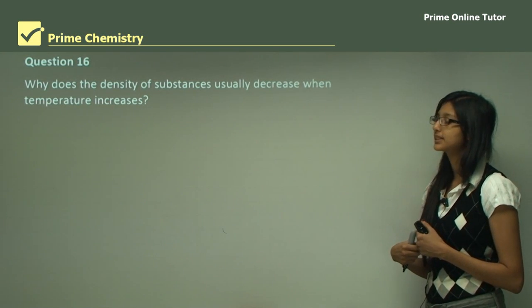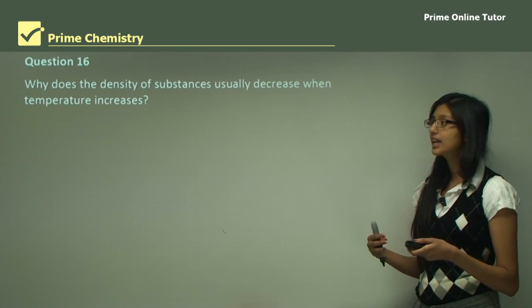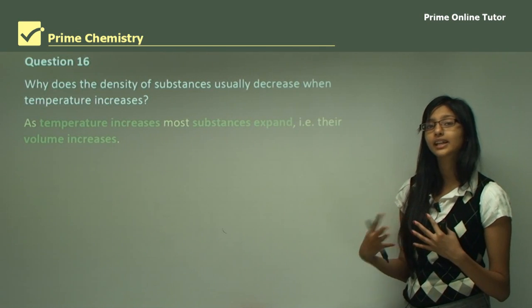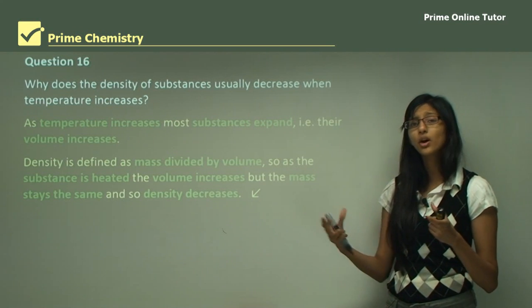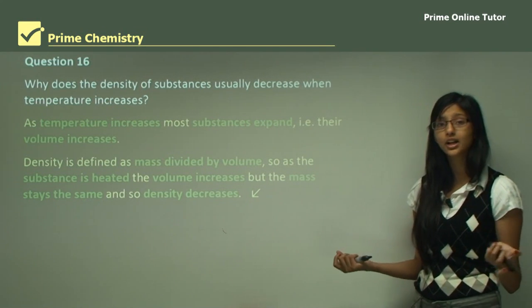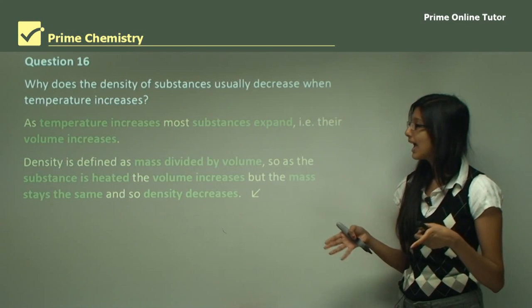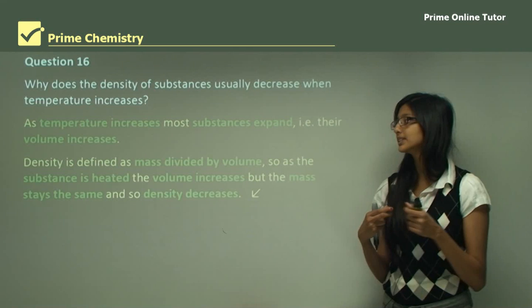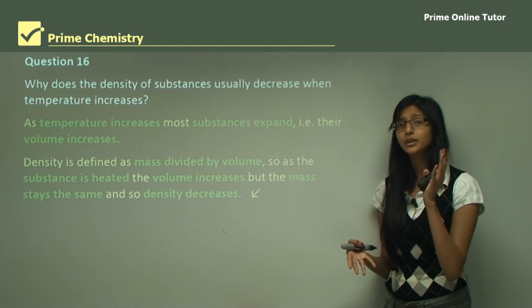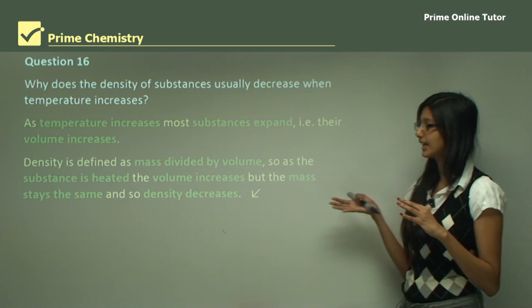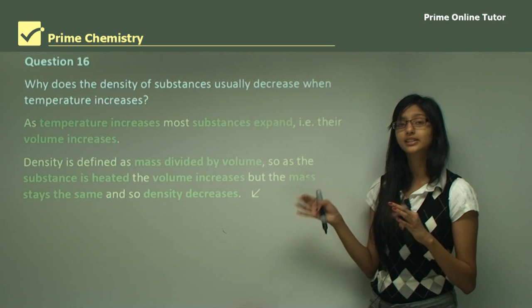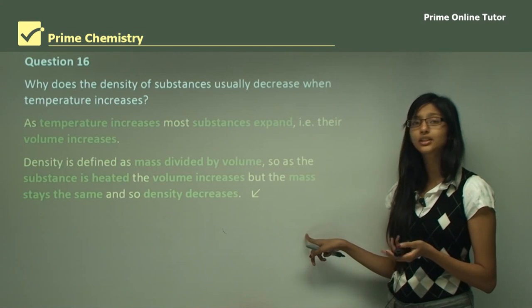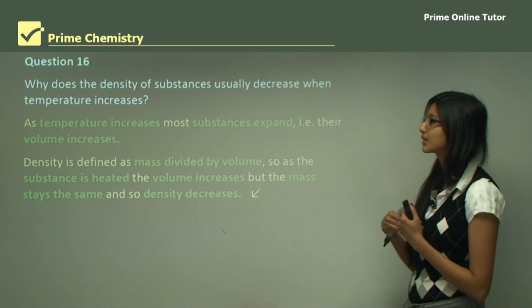Question 16: Why does the density of substances usually decrease when temperature increases? As temperature increases, most substances expand — their volume increases — because the molecules in the substance start to move and vibrate a lot, taking up more volume. Density is defined as mass divided by volume, so if a substance is heated and its volume increases, and since volume and density are inversely proportional, the increased volume causes the density to decrease. The mass stays the same, so because mass is constant and only volume increases, the density decreases.